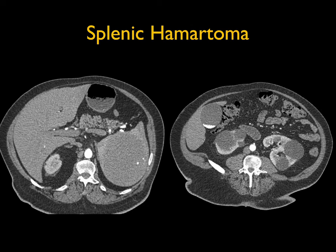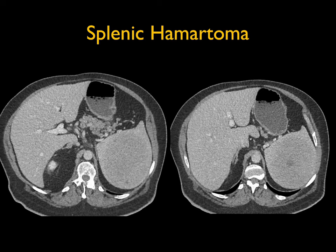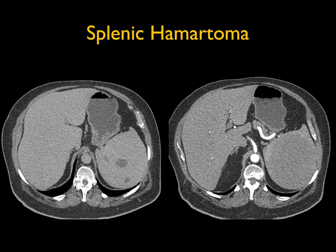In case seven, we see a mass in the spleen. The differential includes hemangioma, cyst, metastasis, and lymphoma. But what you see is a well-defined mass that creates bulging of the spleen. When I see that kind of appearance of a fairly homogeneous lesion, I have to think about a hamartoma. Hamartomas are benign — they're leave-alone lesions with no malignant potential and no increased incidence of bleeding. You can't really biopsy them, so making the diagnosis of hamartoma is important.